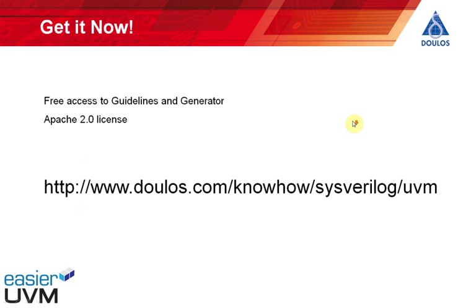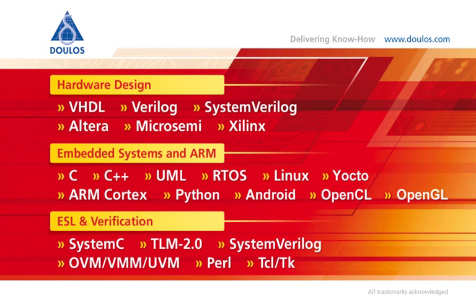So how do you get hold of all of this? Just go to the Dulos website. At the URL shown here, you can get free access to the Easier UVM guidelines and download the generator — again it's free. It comes with an Apache 2.0 license, so you're free to take the generator and even modify it for your own purposes. There's a lot of good things on the Dulos website including tutorial information on UVM and other subjects. At Dulos we're global training providers offering training in hardware design, hardware verification, ARM processor technology, embedded software, and embedded systems. Go to www.dulos.com to find out more.